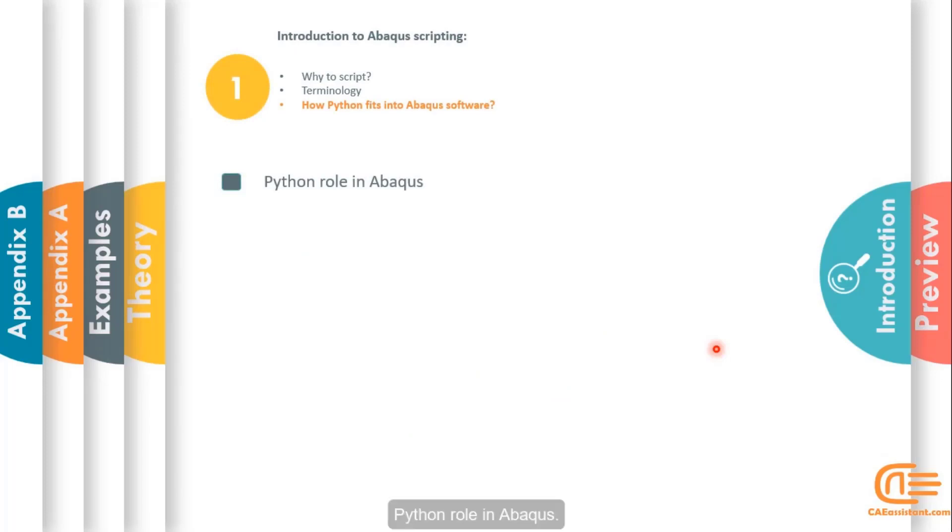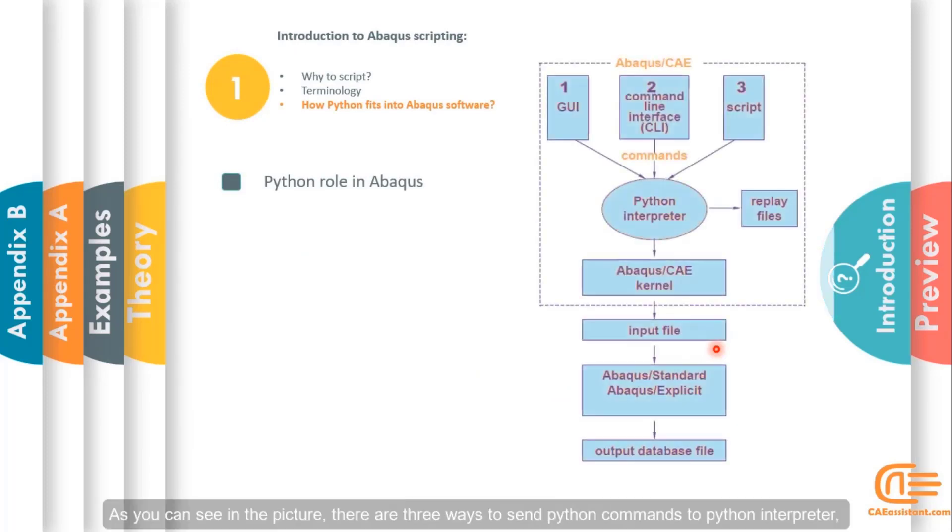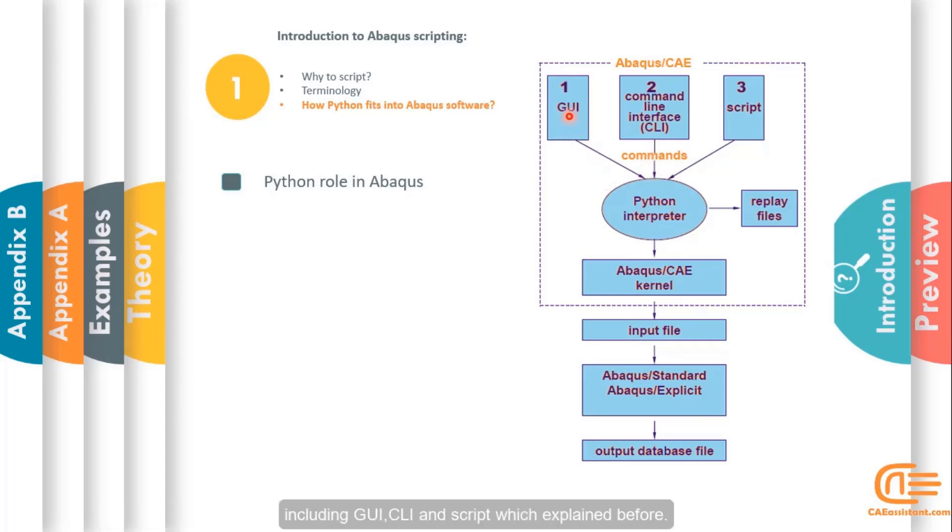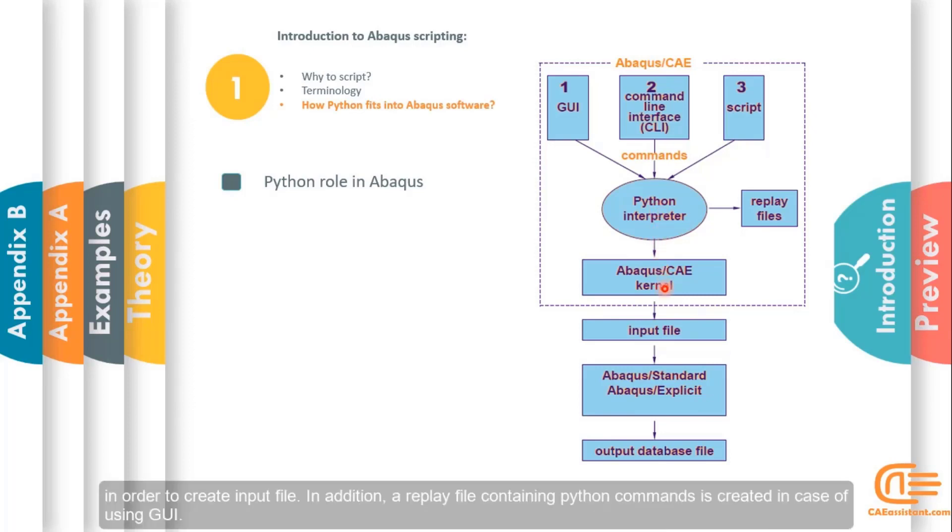Now, let's talk about Python's role in Abacus. As you can see in the picture, there are three ways to send Python commands to Python interpreter, including GUI, CLI and a script which we explained before. After interpreting commands by Python interpreter, they are sent to the kernel in order to create input file. In addition, a replay file containing Python commands is created in case of using GUI.